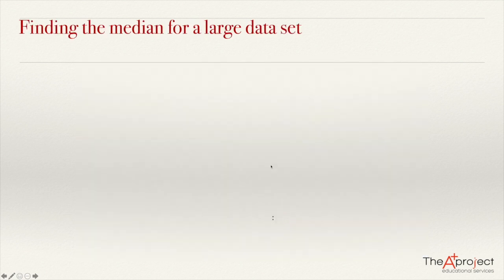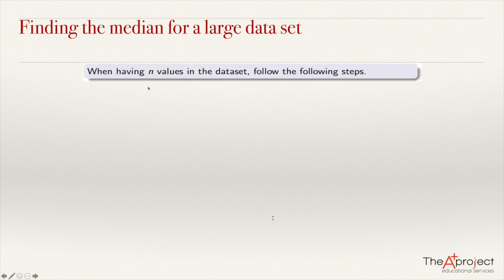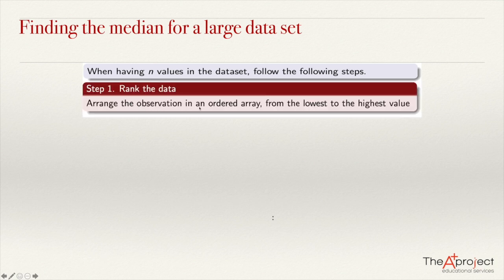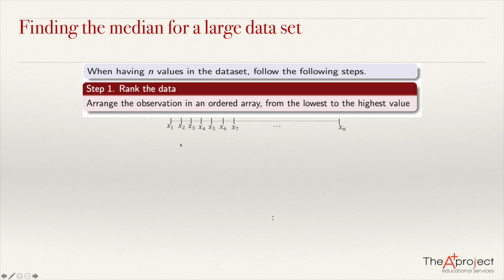What happens if we have a large data set? Because in the previous example, we can observe easily what is the data in the center. If we have N values in the data set and N is large, you cannot see the data in the center easily. You should arrange the observations in order from the lowest to the highest value, so it will appear like this: X1, X2, X3, X4, until the highest one, XN. That will be the first step — order the array.